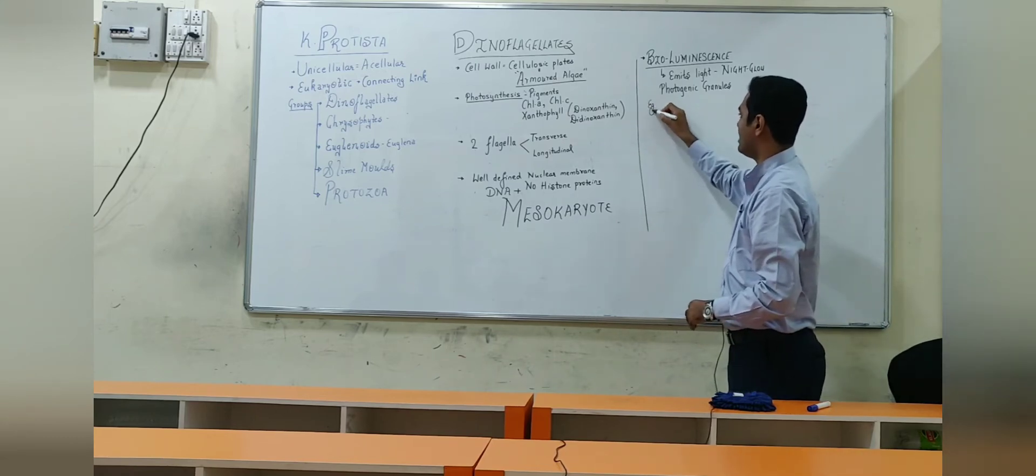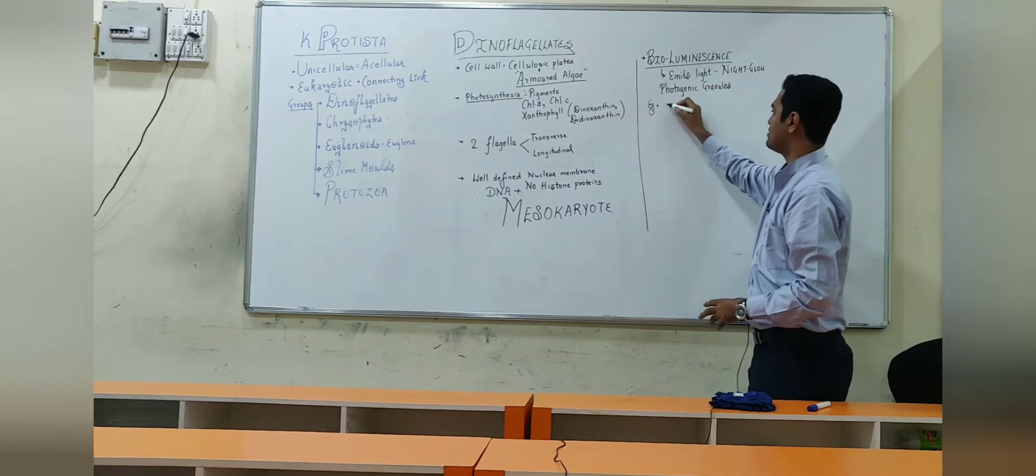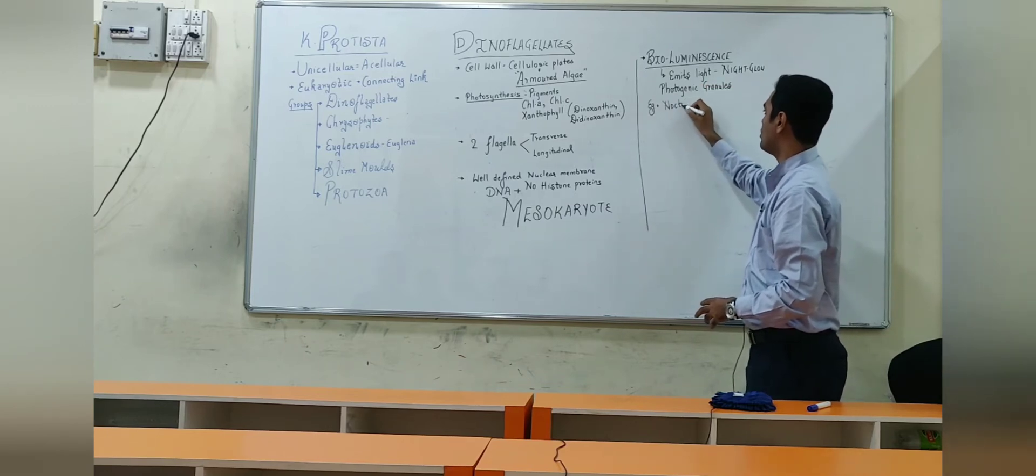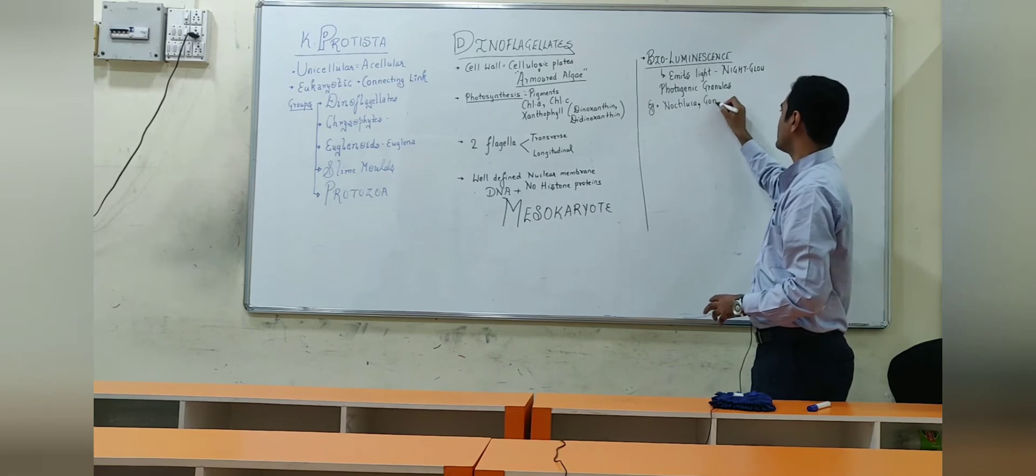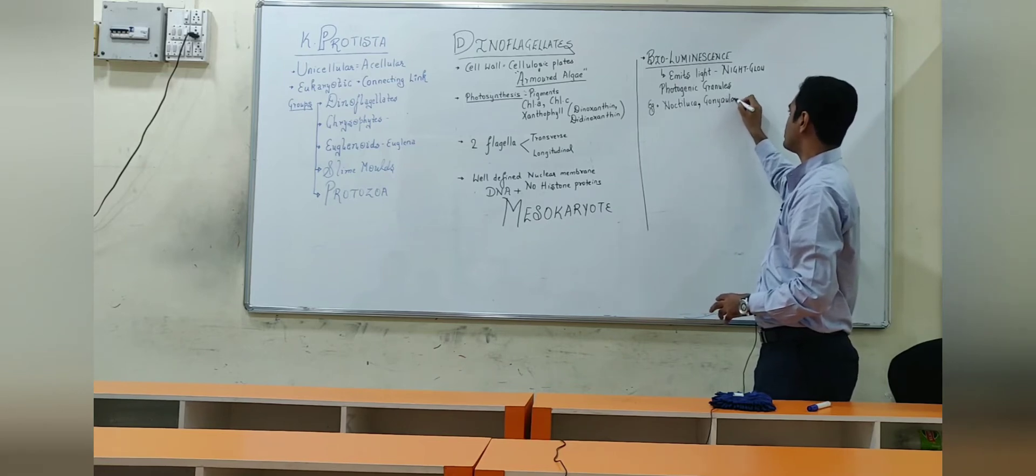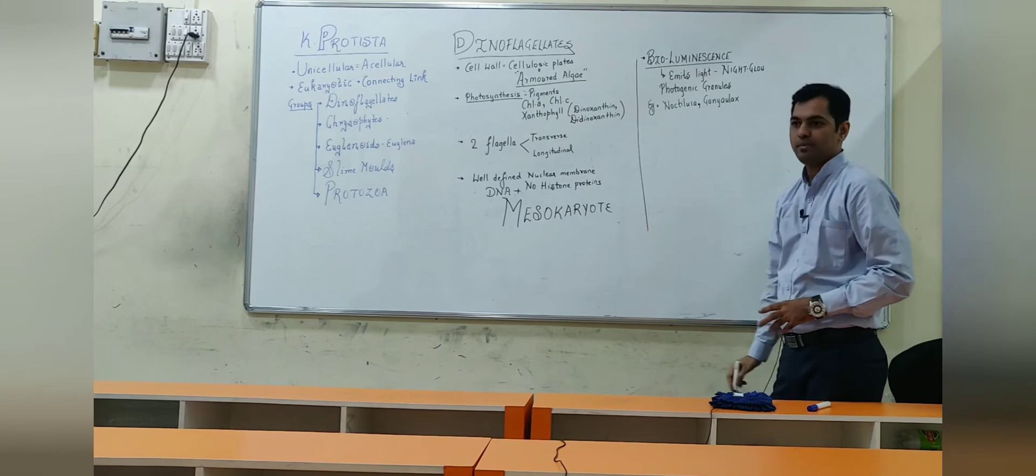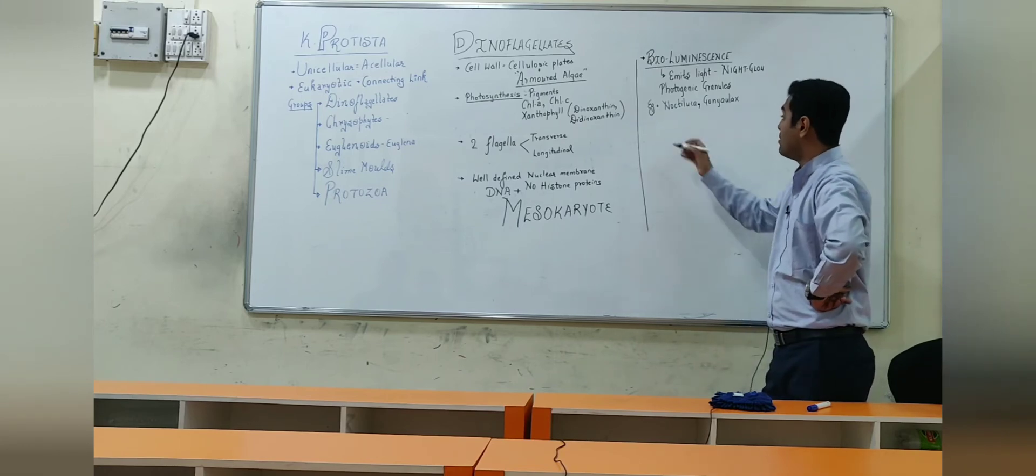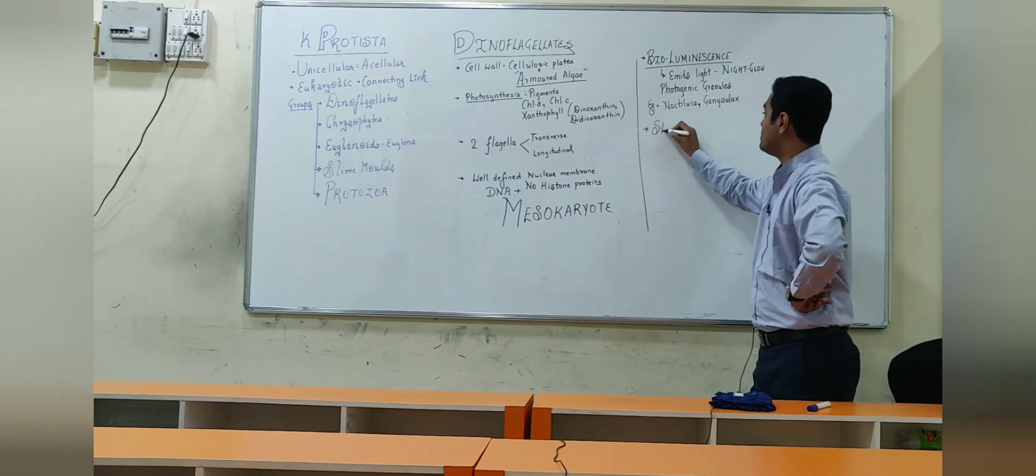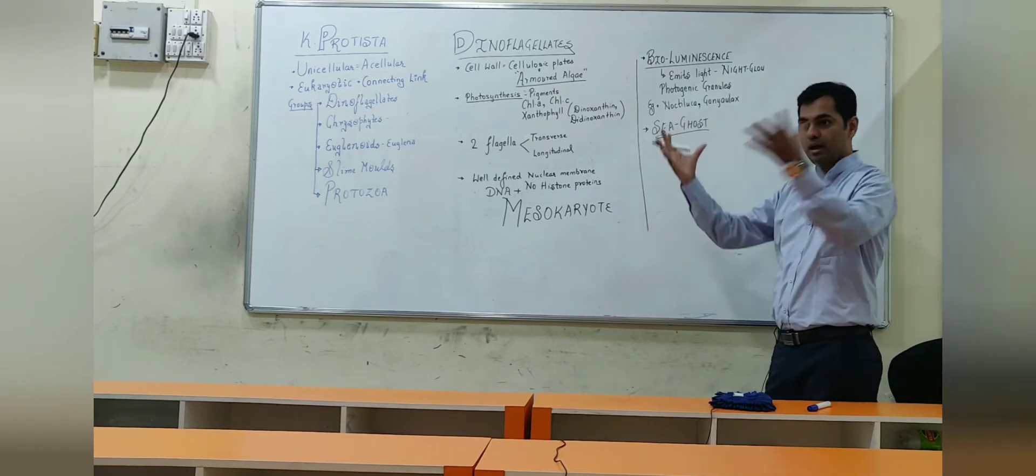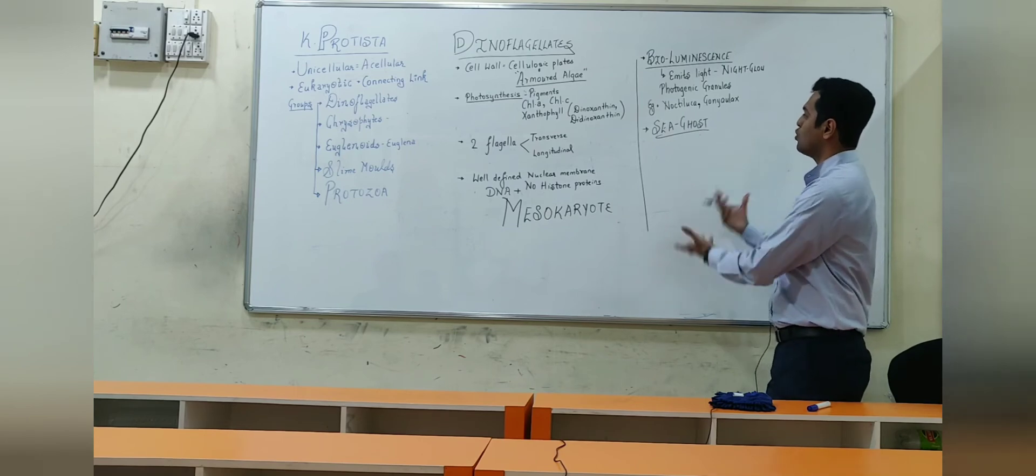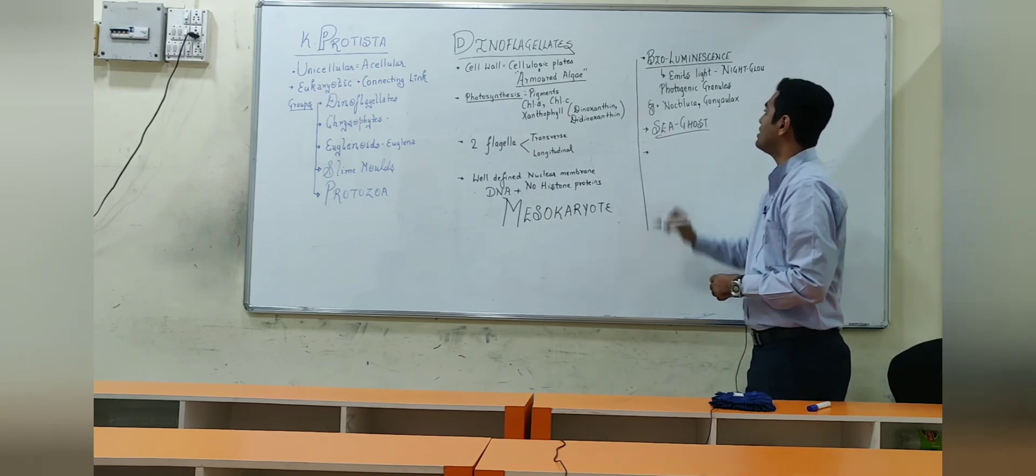Some of the examples of dinoflagellates that show bioluminescence are Noctiluca or Goniolux. Some of the members are also known as sea ghost because in the sea, they glow at night time, so it appears like sea ghost. That's their alternative name.